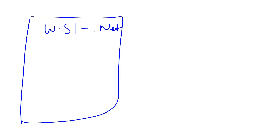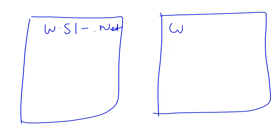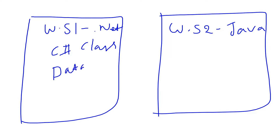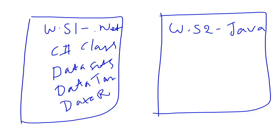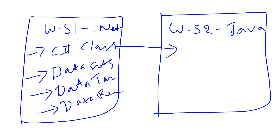Let's see: web server 1 is running a .NET application and web server 2 is running a Java application. In .NET we use C# classes to represent data, along with datasets, data tables, and data readers. If we want to transfer this data to another platform like Java, Java does not know what a C# class, dataset, data table, or data reader is. Java has its own data representation objects.